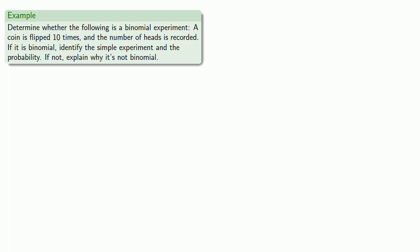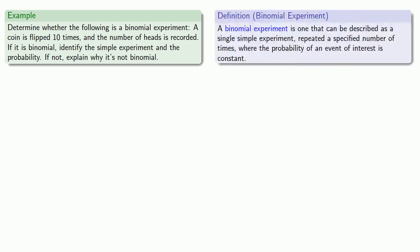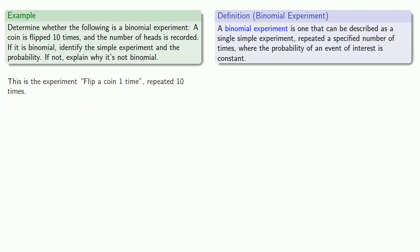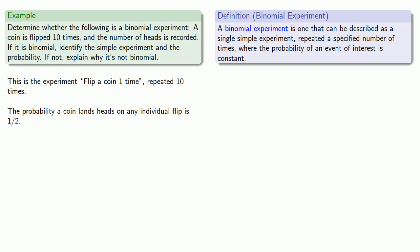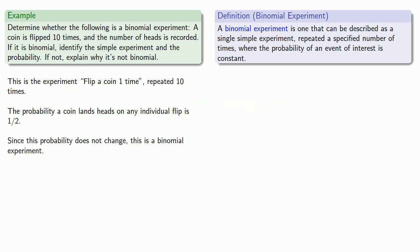Using our definition of binomial experiment, we need to describe this as a single simple experiment repeated a specified number of times. The experiment is: flip a coin one time, repeated ten times. The probability of the event of interest must also be constant. We're interested in recording the number of heads, so the event of interest is that the coin lands heads, and the probability of heads on any individual flip is one-half. Since this probability doesn't change, this is a binomial experiment.